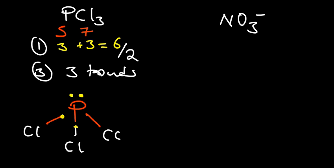Finally, let's look at NO3⁻. Nitrogen is coming from group five and oxygen from group six. Nitrogen needs three electrons and each oxygen atom needs two, so with three oxygens that's six. Since there is a negative charge indicating a gain of one electron, we subtract one — reducing the number of required electrons. So three plus six is nine, minus one equals eight.